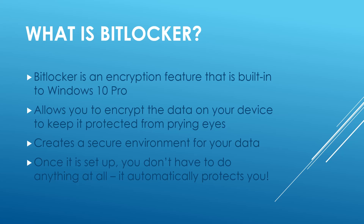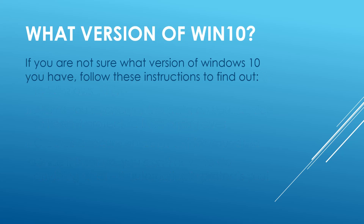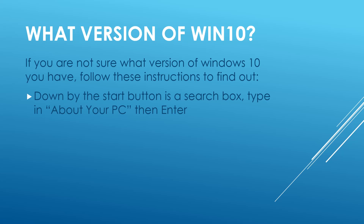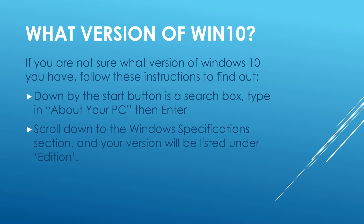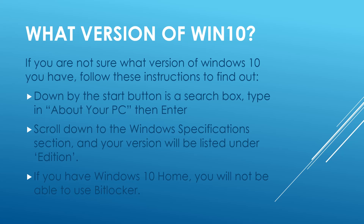What version of Windows 10 do you have? If you're not sure whether you have Windows 10 Pro, here's how to find out: down by the Start button is a search box — type in 'about your PC' and press Enter. Scroll down to the Windows Specifications section and your version will be listed under Edition. It'll tell you if it's Windows 10 Home or Windows 10 Pro. If you have Home, unfortunately you will not be able to use BitLocker.